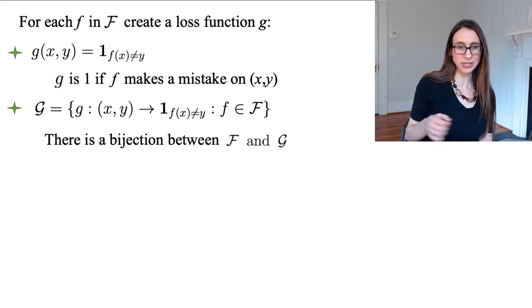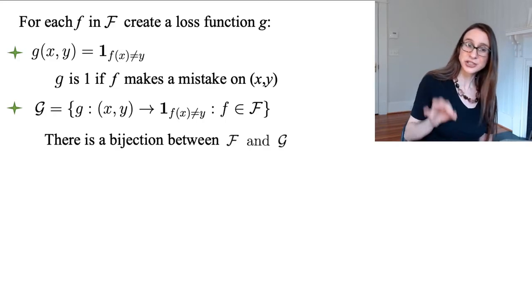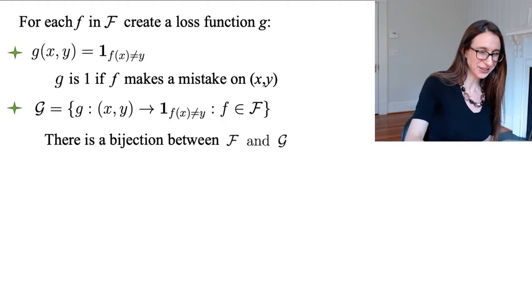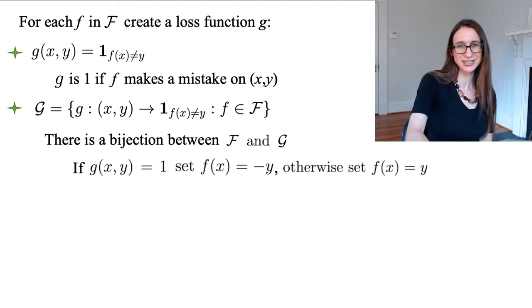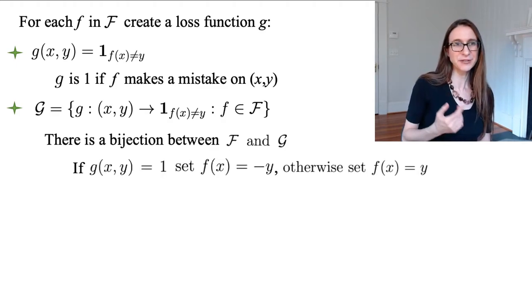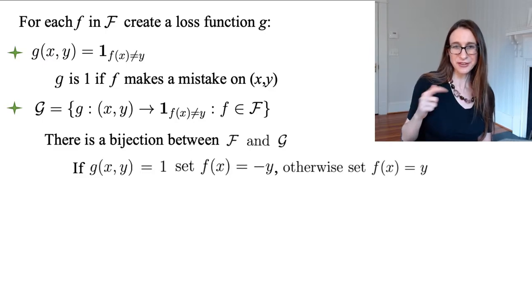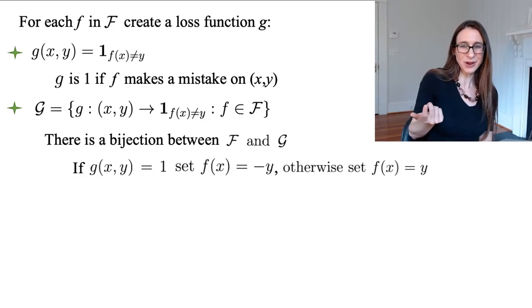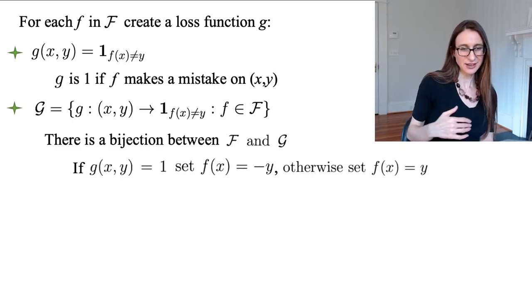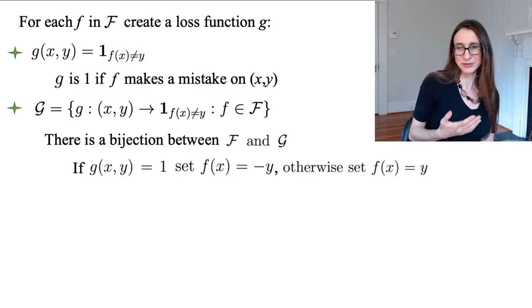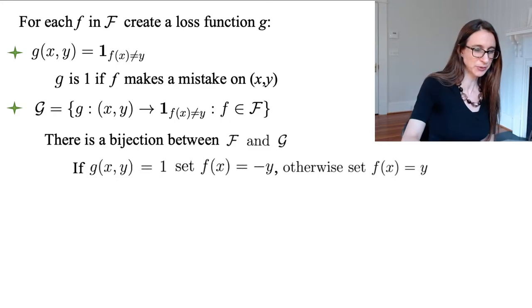Now there is a bijection between F and G, because for each f, you can easily compute its loss function g, and then for each g, you can go back to f. That's pretty easy to see, because if g(x,y) = 1, you know that f made a mistake, right? And you know what y is, so you can just set f to be the opposite of y if g is 1, and if g is 0, you just set f equal to y. So it's easy to go back and forth between them.